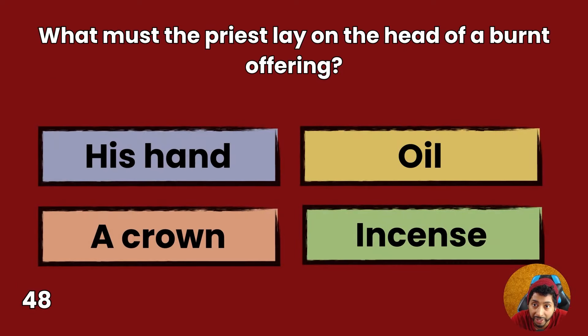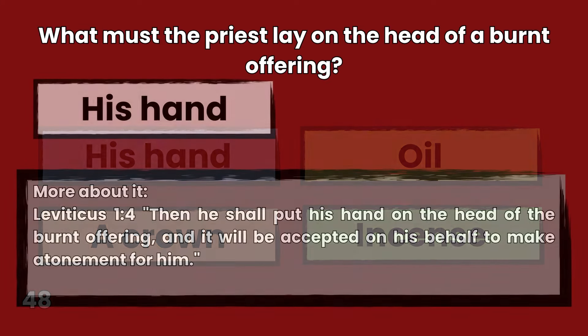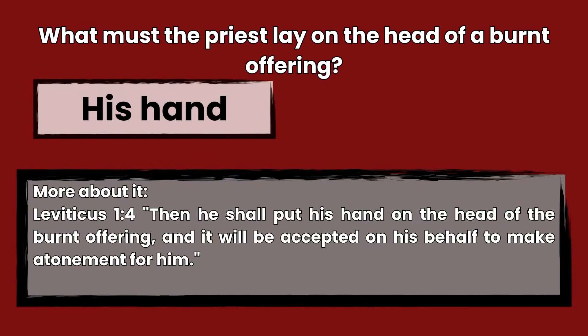Question 48: What must the priest lay on the head of a burnt offering? His hand, oil, a crown, or incense? Answer: His hand. Leviticus 1:4 — Then he shall put his hand on the head of the burnt offering, and it will be accepted on his behalf to make atonement for him.